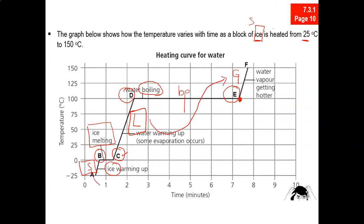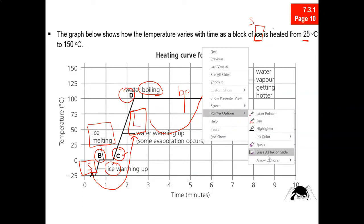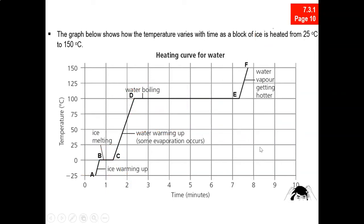From here: solid to liquid and then liquid to gas. What we have is solid, liquid, and gas. In between B and C, the state is a mixture — it is the solid and liquid state. For boiling at D to E, it is a mixture of the liquid and gaseous state.